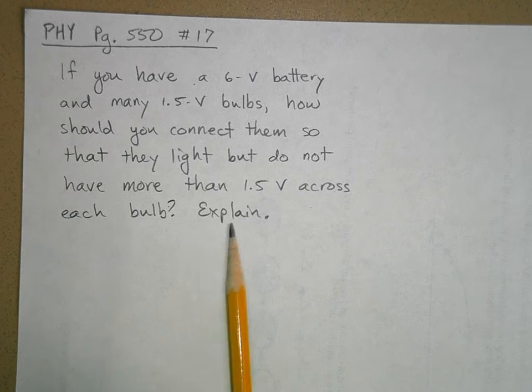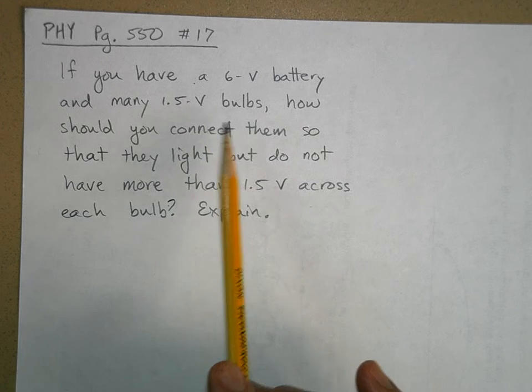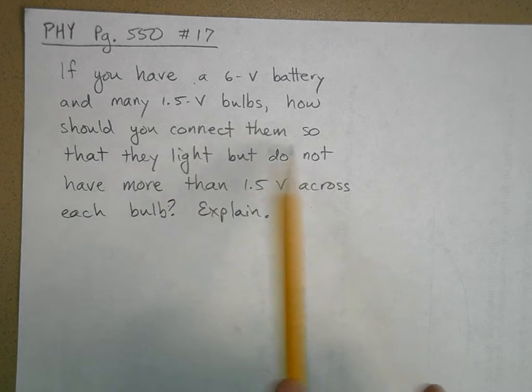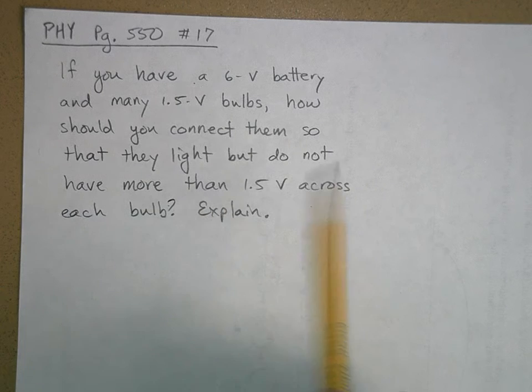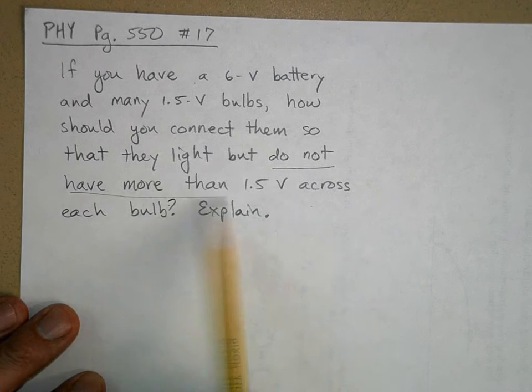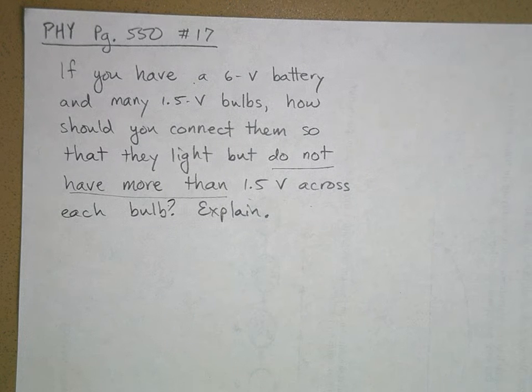Okay, on page 550, number 17, if you have a 6-volt battery and many 1.5-volt bulbs, how should you connect them so that they light but do not have more than 1.5 volts across each bulb? Explain.